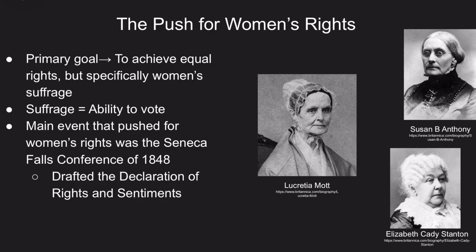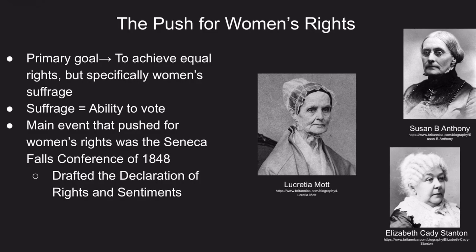Out of the Second Great Awakening comes a fiery desire among women and more progressive men to push for women's rights and equality. This movement gained momentum in the mid-1800s. The primary focus was to secure women's suffrage — suffrage being the right to vote, not a fancy way of talking about suffering, which women were already experiencing under the male-dominated society known as the patriarchy. Key figures included Susan B. Anthony, Elizabeth Cady Stanton, and Lucretia Mott.